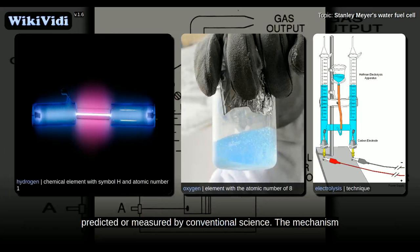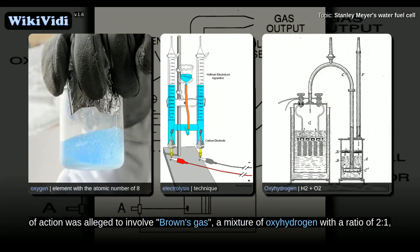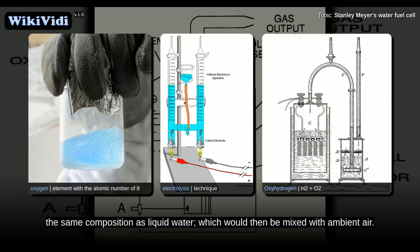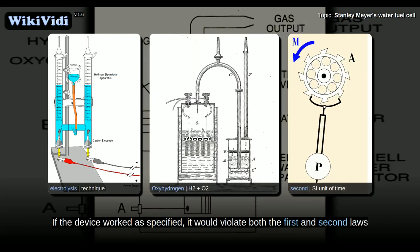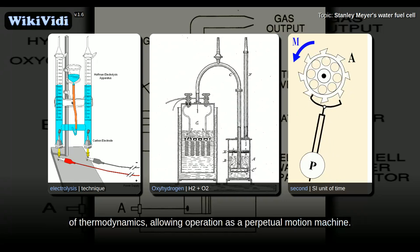The mechanism of action was alleged to involve a mixture of oxyhydrogen with a ratio of 2 to 1, the same composition as liquid water, which would then be mixed with ambient air. If the device worked as specified, it would violate both the first and second laws of thermodynamics, allowing operation as a perpetual motion machine.